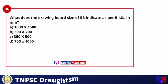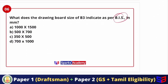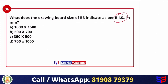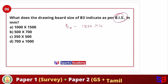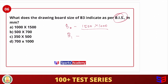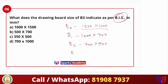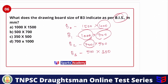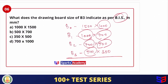Next question: what does drawing board size B3 indicate as per BIS? BIS stands for Bureau of Indian Standards. B1 is 1000 × 700, B2 is 700 × 500, and B3 is 500 × 350. Using this pattern, the answer for B3 is 500 × 315, so the answer is C.